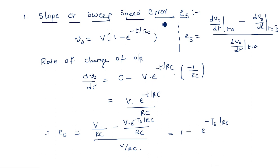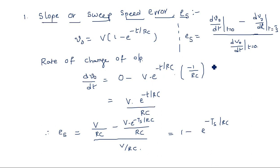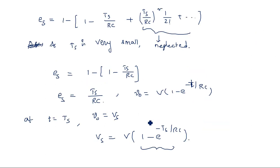The first parameter calculated was the slope or sweep speed error Es, using the formula: Es = (dv₀/dt at t=0 minus dv₀/dt at t=Ts) divided by the initial value. Substituting t=0 gives one value and t=Ts gives another value, and after expansion we calculated Es.